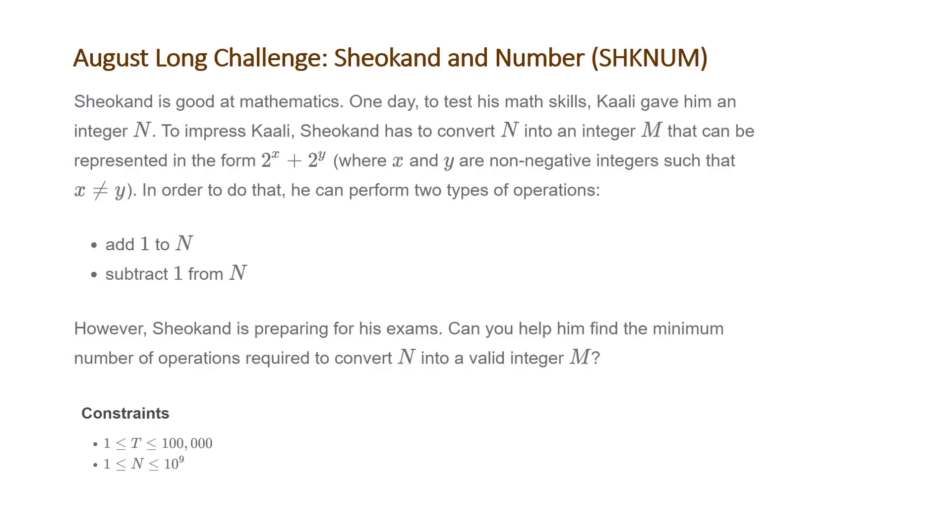The problem states Shoeokand is good at mathematics. One day to test his math skills, Kali gave him an integer n. To impress Kali, Shoeokand has to convert n into an integer m that can be represented in the form 2 to the x plus 2 to the y,